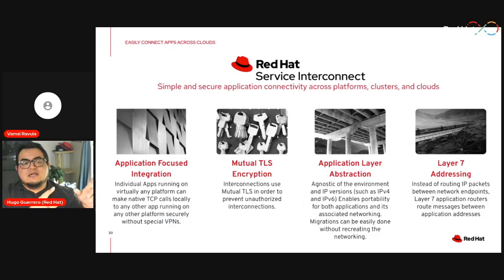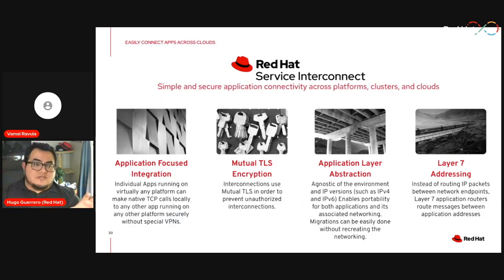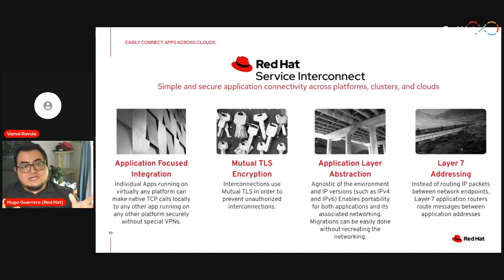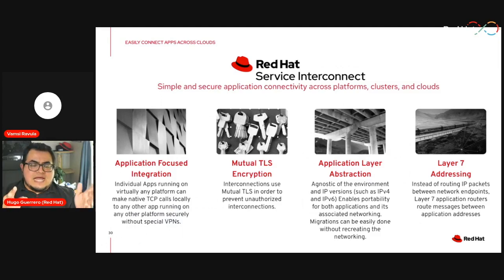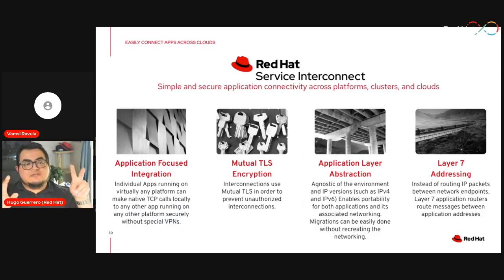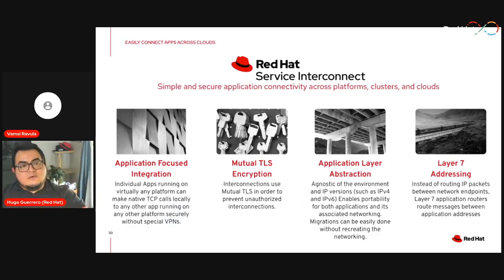Services and applications use the standard protocols they were using before — for example, the PostgreSQL database exposing on port 5432 without TLS. No TLS is added to those services, no sidecars, no code changes required. We were also using regular user-scoped access — not cluster admin — to create this configuration. Bamsi was just a regular OpenShift user, not a cluster admin, when setting up this network.